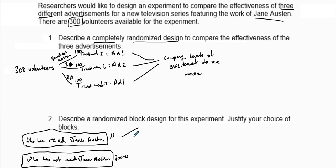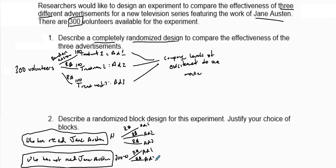From those who have read Jane Austen, we then randomly assign them into Ad 1, Ad 2, and Ad 3 as the three treatments. The same thing for those who did not read Jane Austen — we randomly assign them to Ad 1, Ad 2, and Ad 3. Then we compare the results within each block, and compare the final results across the two blocks.